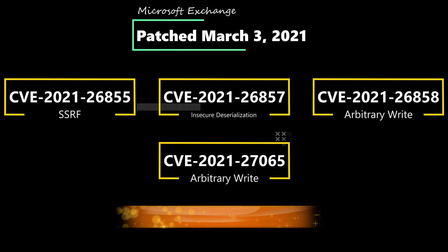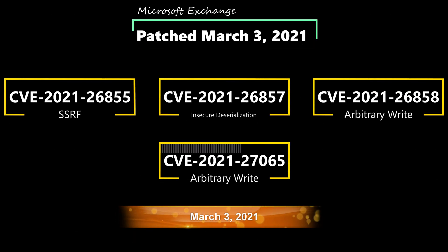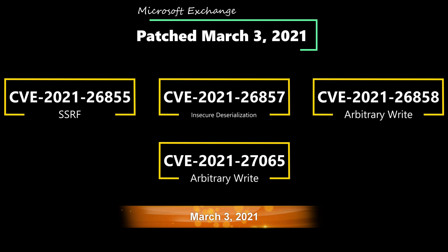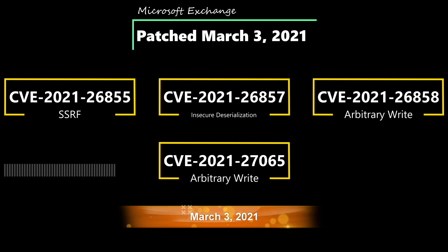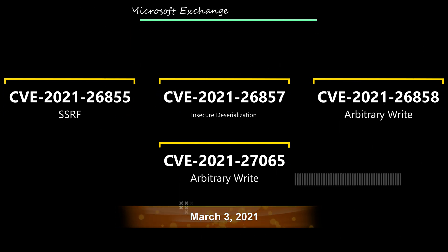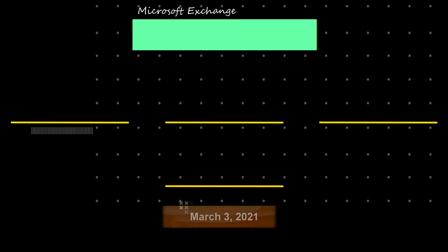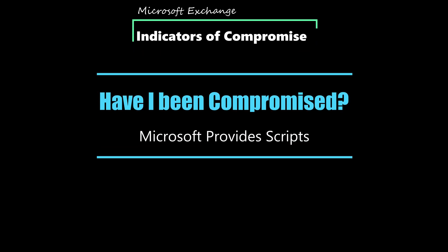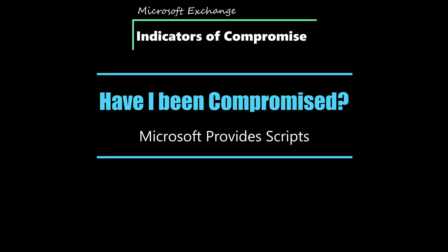For Exchange administrators out there, keep in mind all these vulnerabilities have been patched as of March 3rd, 2021. Microsoft urges anyone with an Exchange server to patch immediately. If you want to see if your server has been compromised, Microsoft has provided PowerShell scripts and commands to be run on your server to find logs and indicators to look for.